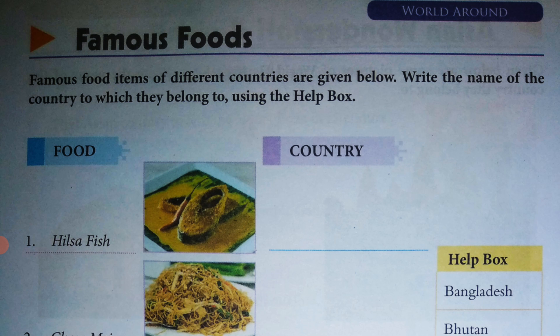The first one is Hilsa fish. The country to which this food item belongs is Bangladesh. Bangladesh is mentioned at the top of the help box.